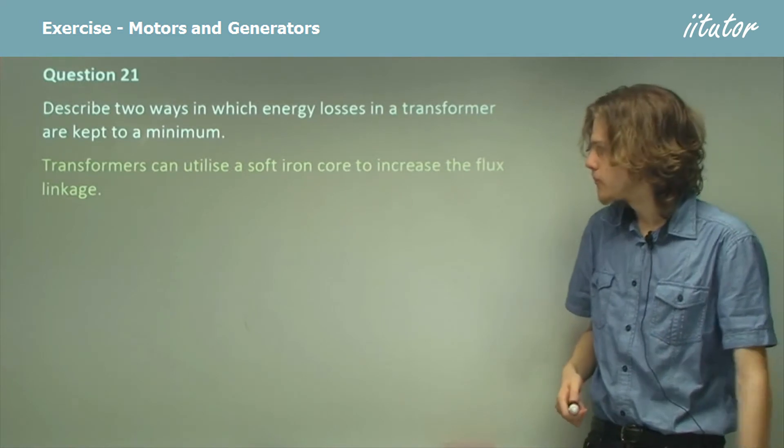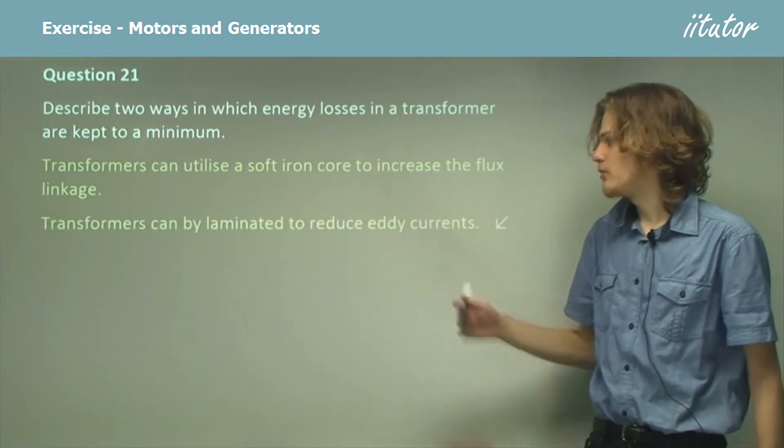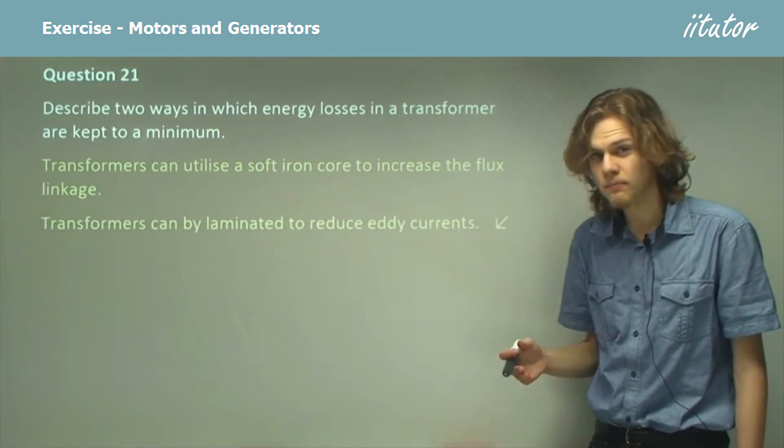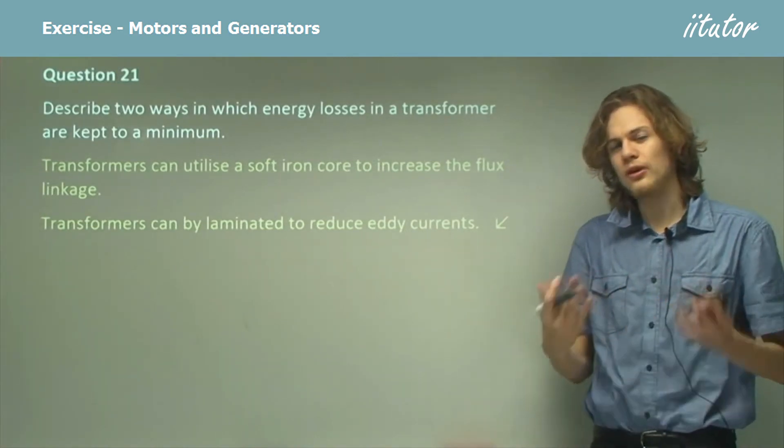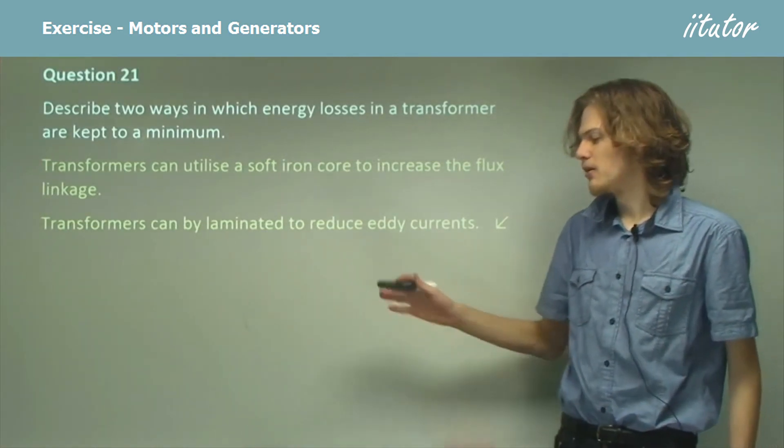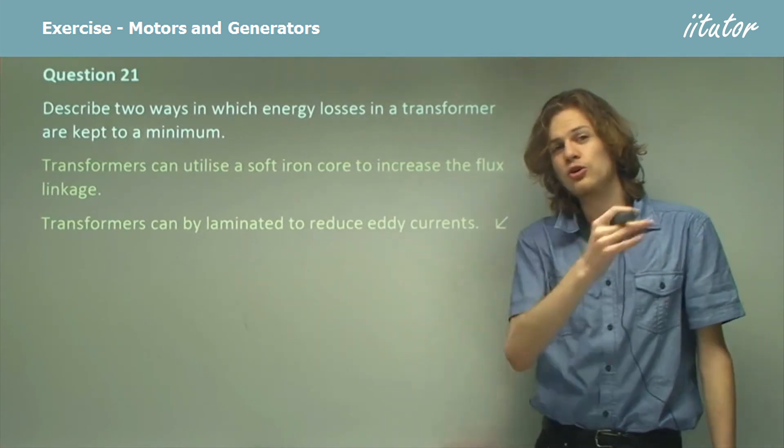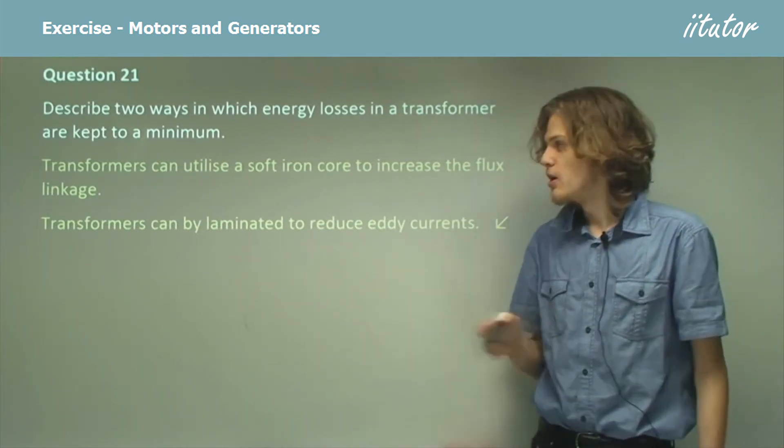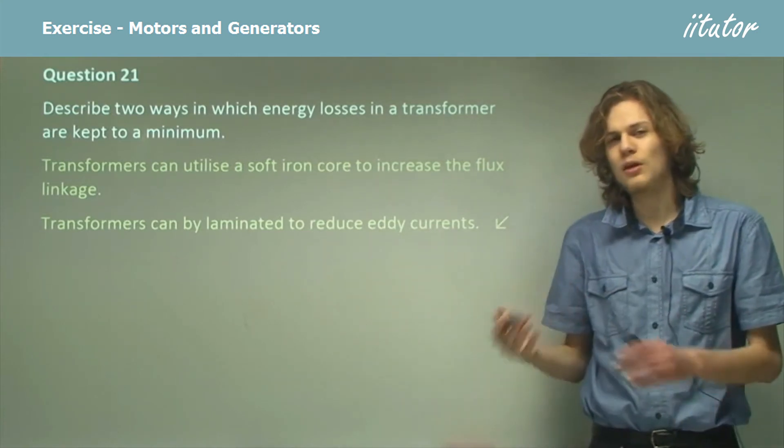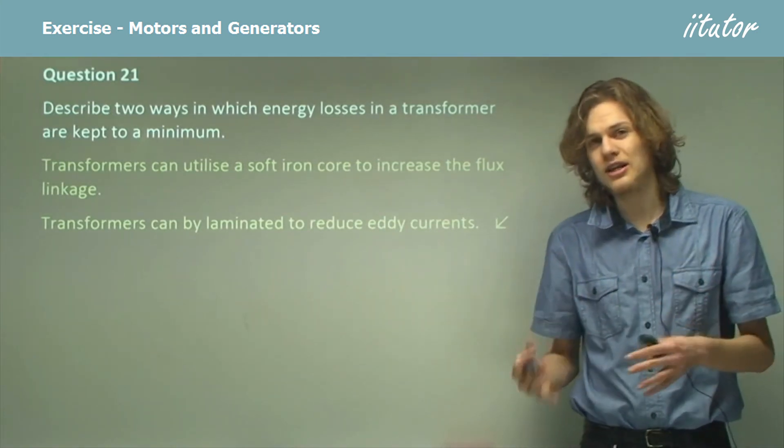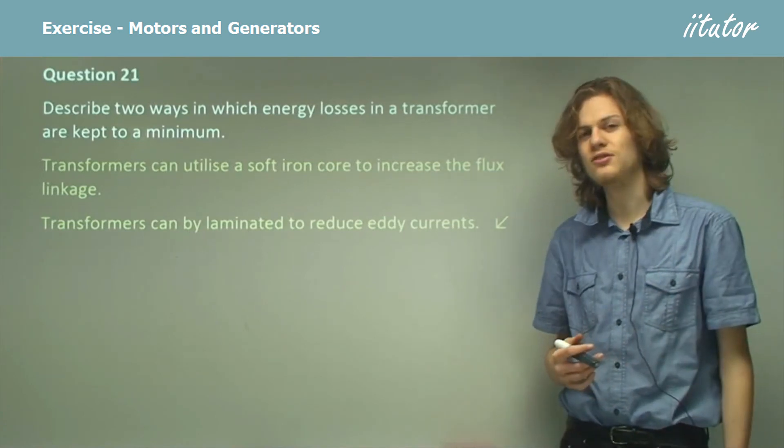Another way is that we can laminate transformers to reduce eddy currents. Eddy currents are the little currents that flow in circles and create heat. And if we're losing heat from eddy currents, then it's not going into the secondary coil. So if we laminate the transformer to reduce the eddy currents, then that means that we'll keep more energy when we transform it into the secondary coil.